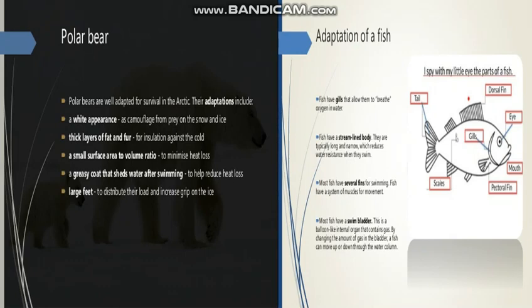Polar bears are well adapted for survival in the Arctic region where temperature is very low. Their adaptations include a white appearance according to the snow and ice. Due to their white color, polar bears can easily hide from enemies because their color is similar to ice and snow.